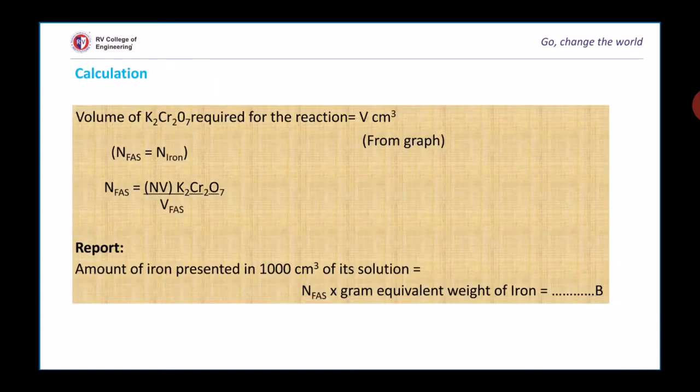By using laws of volumetry, we can calculate the amount of iron present in the given solution. First, we will calculate the normality of ferrous ammonium sulfate by knowing the strength of potassium dichromate. Finally, we will calculate the amount of iron present by using normality multiplied by gram equivalent weight of iron.